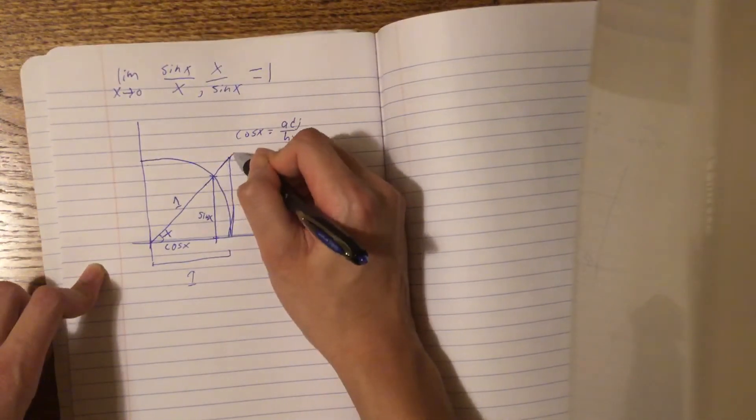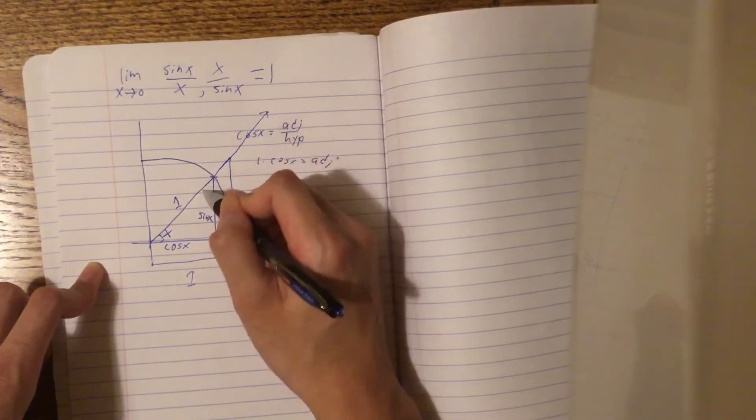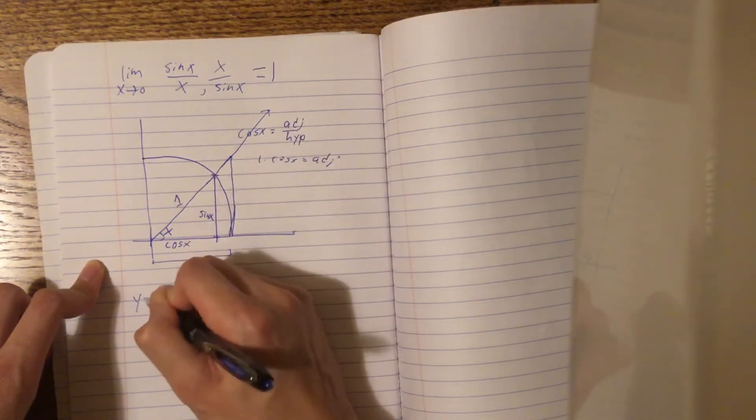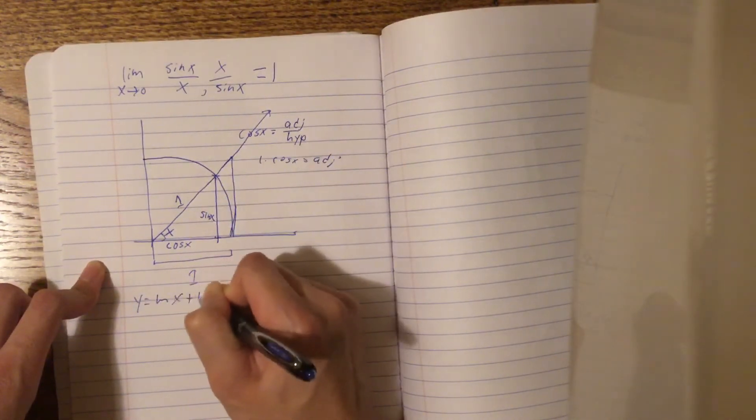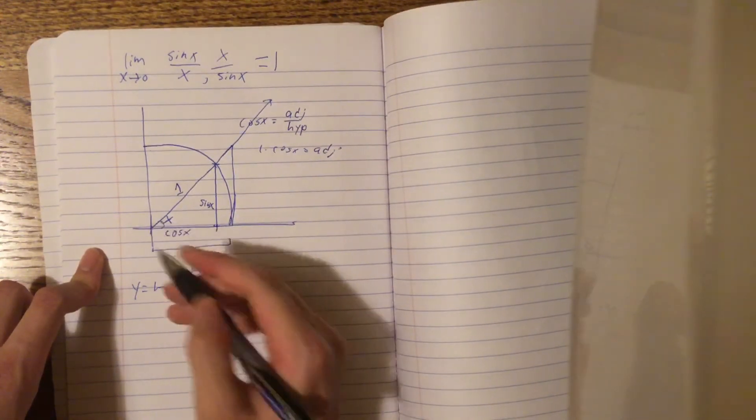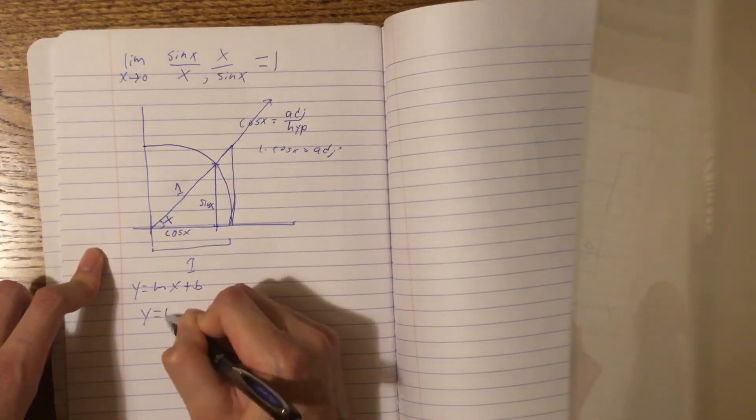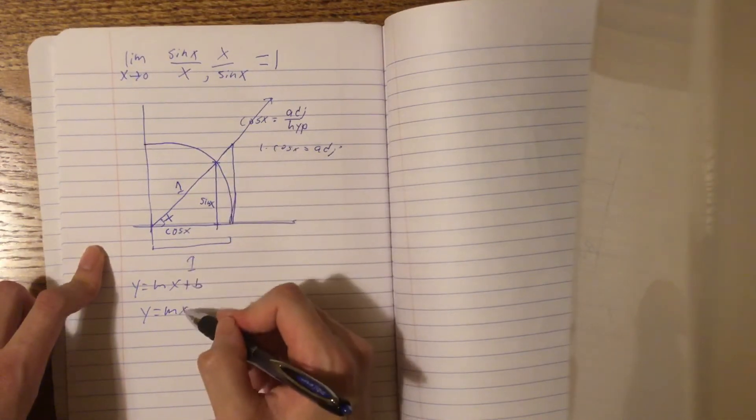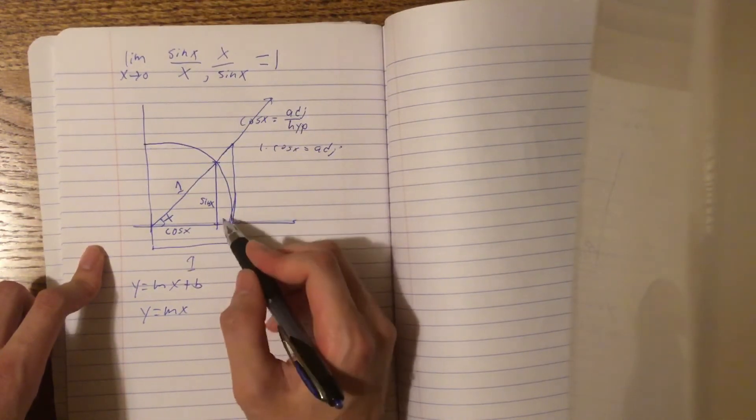Well, the equation of this line has the formula y equals mx plus b, because it's a linear line. It hits the y-intercept of 0, because it passes through 0, so we now know it's of the form y equals mx, but its slope is rise over run, right?